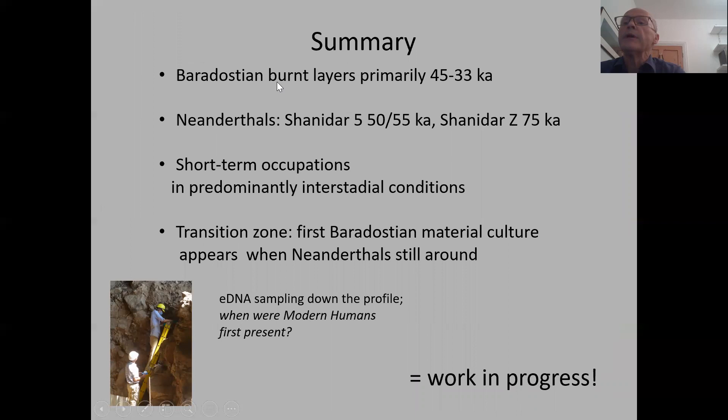To summarize: we have Baradostian burnt layers primarily dating to 45,000 to 33,000 years ago; Neanderthals at 50,000–55,000 for Shanidar 5, and 75,000 years ago for the new Neanderthal and the flower burial group. We find short-term occupations in predominantly interstadial conditions, both above and below the transitional zone and through the Baradostian layers. In the transition zone, clearly stratified, the first Baradostian material culture appears to have been used when Neanderthals were still present.